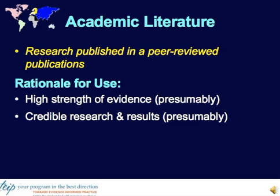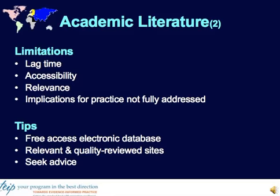The academic literature can include that which is published in peer-reviewed publications, which is considered reliable, credible, and high-quality due to this peer-review process. But there are limitations. The lag time for publication means it may not be the most current. Subscription costs can often limit access. The research may lack local context relevance, and we rarely know what to do with the evidence or how to implement it.